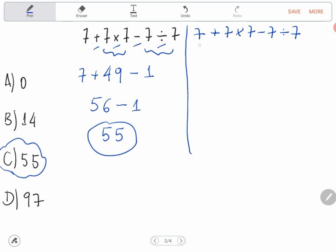Some people can do that, start here 7 plus 7, that is 14. 14 times 7 is 98 minus 1, and we have 97.